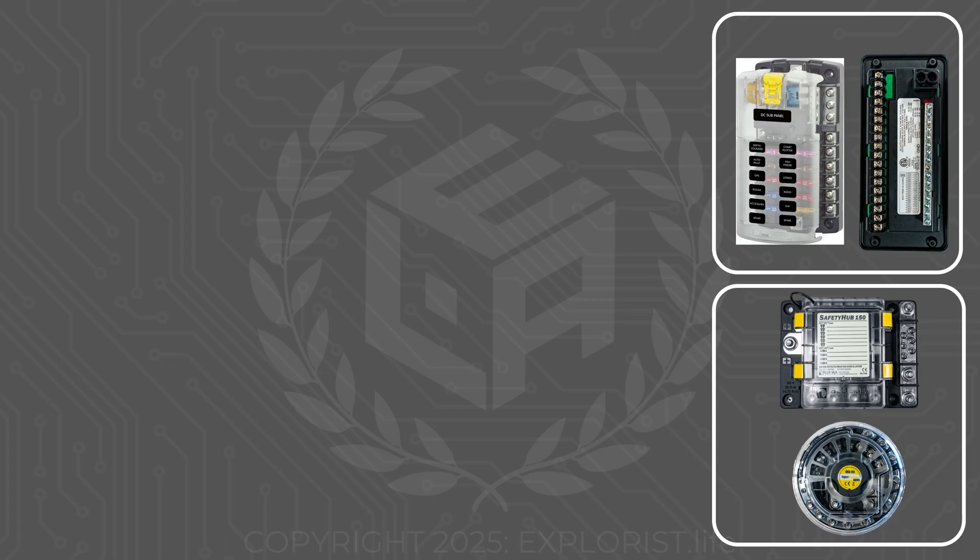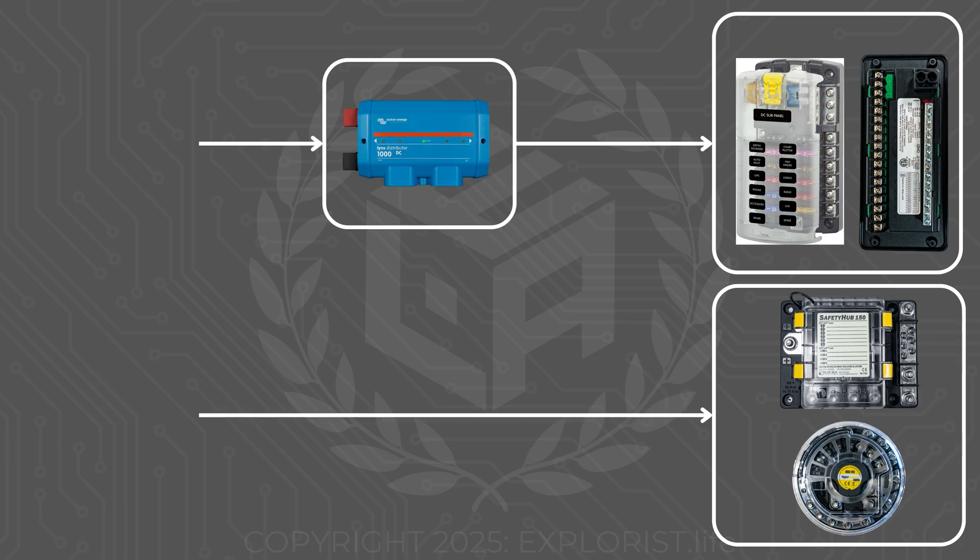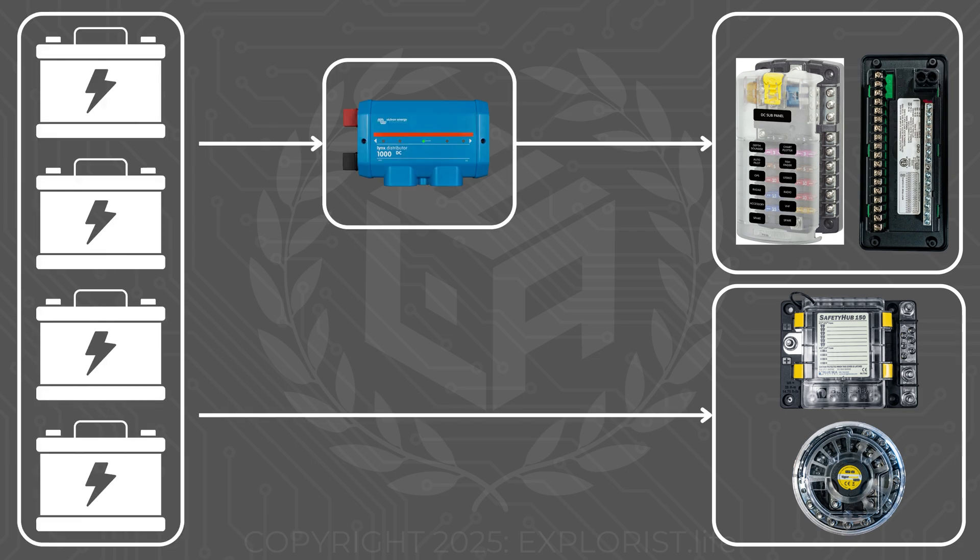They're all getting their power from a different distribution hub, like the Victron Links Distributor, which is getting its power from the battery, but we're going to skip all of that side of the system and focus mainly on how we get power to the rest of the branch circuit. Let's get started.